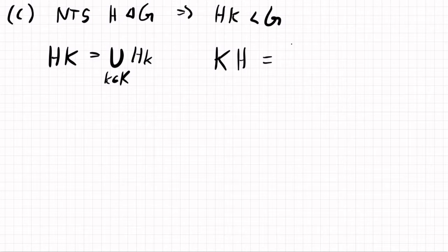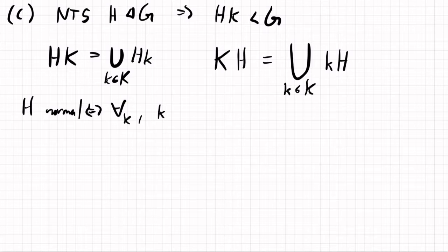And then KH will be a union, similarly, of left cosets. My little k here, again. And so, because h is normal, for all k, h normal, this is the same thing as saying for all k, kH equals Hk. So this part is interchangeable. So the conclusion is that HK equals KH.